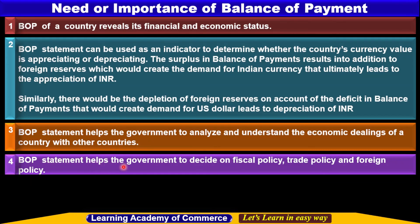Balance of payment statement helps the government to decide on fiscal policy, trade policy and foreign policy. Whenever new policies are formulated by the government, the previous balance of payment record is reviewed to understand the current position — whether there is a deficit or surplus, which items are being imported or exported — and accordingly fiscal policy, trade policy and foreign policy are announced to promote certain imports/exports or encourage domestic manufacturing.